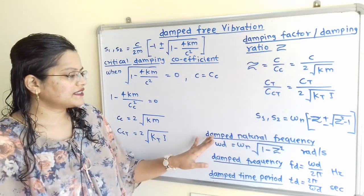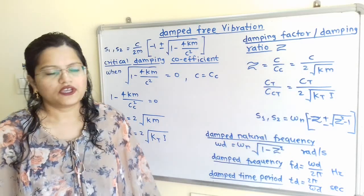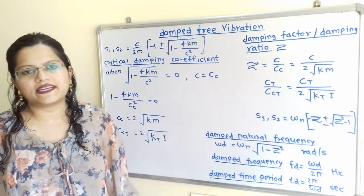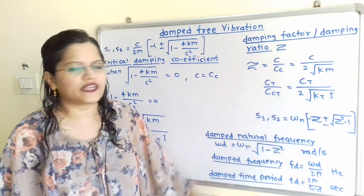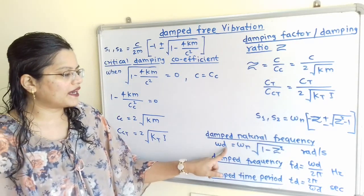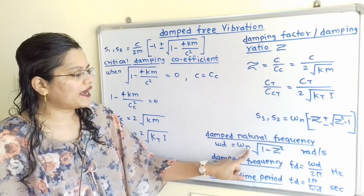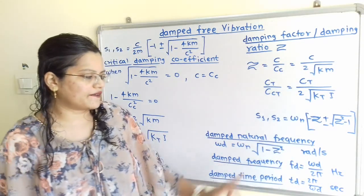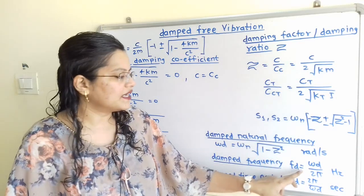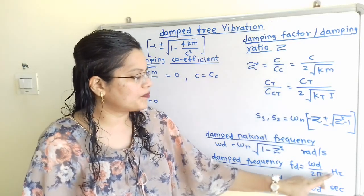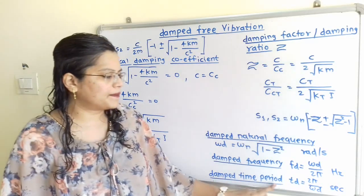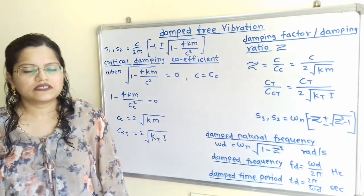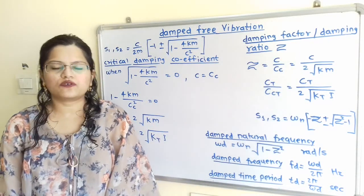Next is the damped natural frequency. While natural frequency is ωn, when a damper is provided the damped natural frequency ωd = ωn √(1 − ζ²), with units radians per second. The damped frequency Fd = ωd / (2π), with units hertz. The damped time period Td = 2π / ωd, with units seconds. All these formulas are important to solve problems.